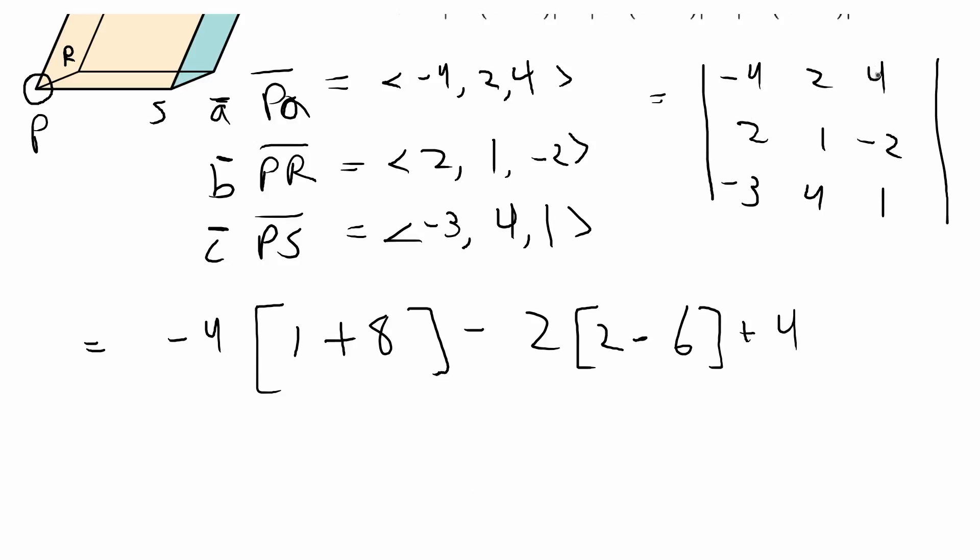We ignore the first row and the third column and then we do 2 times 4 which is 8 plus 3. So minus -3. So that's going to give us -36 plus 8 plus 4 times 11 which is 44.